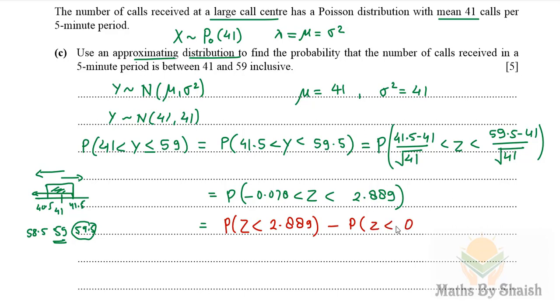By the typical definition of probability, if we are finding the probability of X between a and b, we write it as probability of X is less than b minus probability of X is less than a.